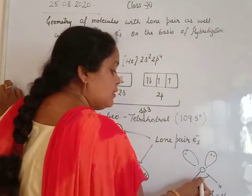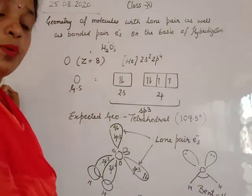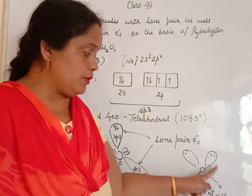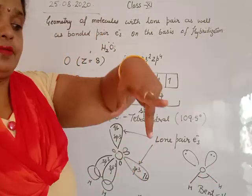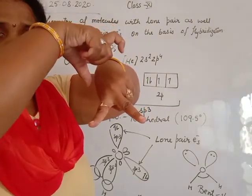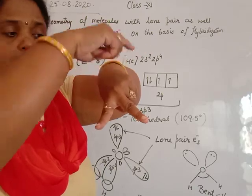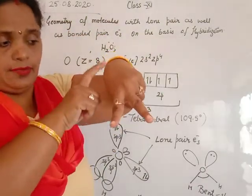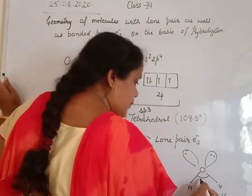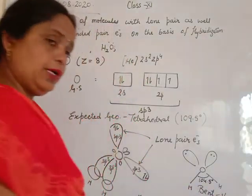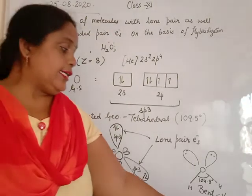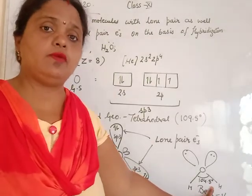Regarding the bond angle in water: the lone pairs repel each other. When they repel each other, they push outward, which in turn pushes the bond pairs closer together. The bond angle decreases even more compared to ammonia — to 104.5 degrees — due to lone pair–lone pair as well as lone pair–bond pair repulsion. So the actual geometry is bent shape and the bond angle is 104.5 degrees.